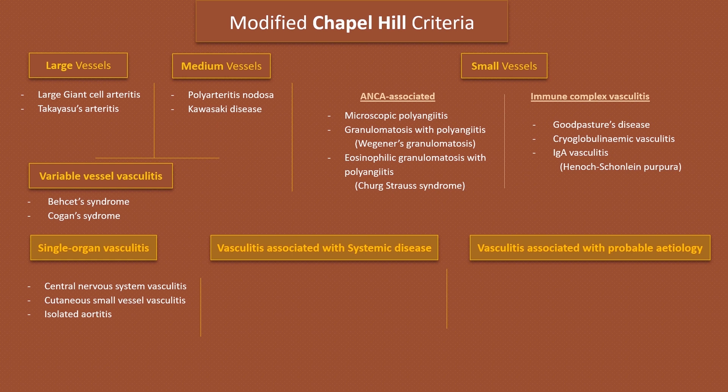Some patients initially diagnosed with single organ vasculitis may develop other disease manifestations, warranting reevaluation for another systemic vasculitis. For example, cutaneous vasculitis later becoming polyarteritis nodosa.